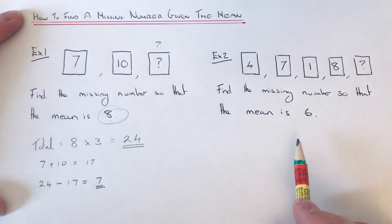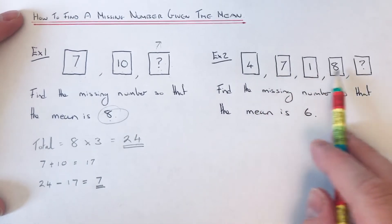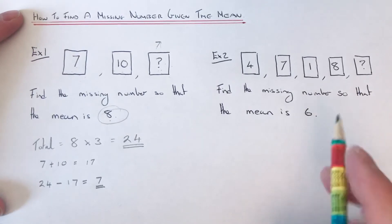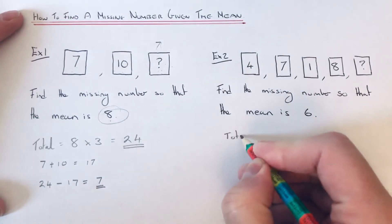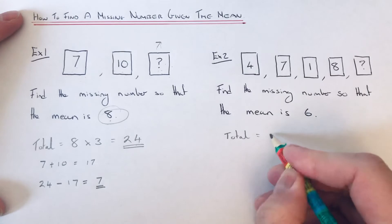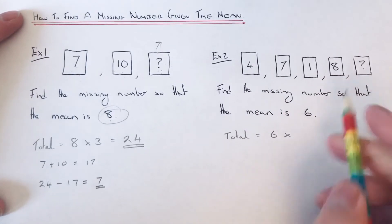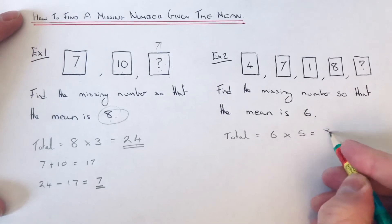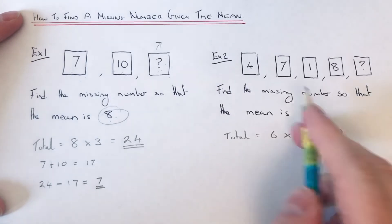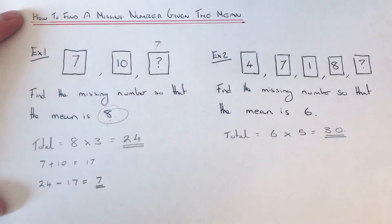First thing we do is work out the total of all five numbers. We multiply the mean by how many numbers we've got. So we do 6 times 5. 6 times 5 is 30, so our five numbers add up to 30.